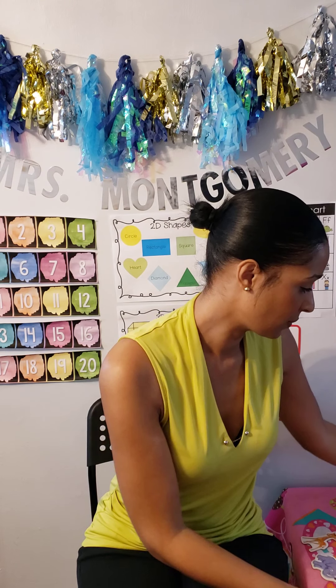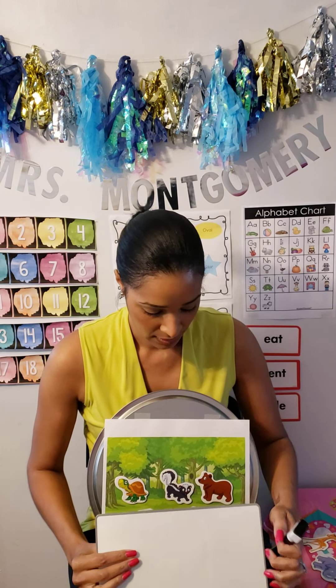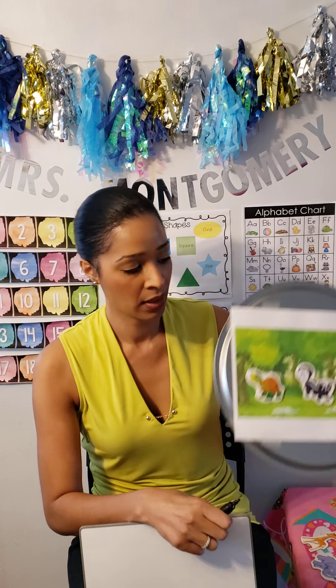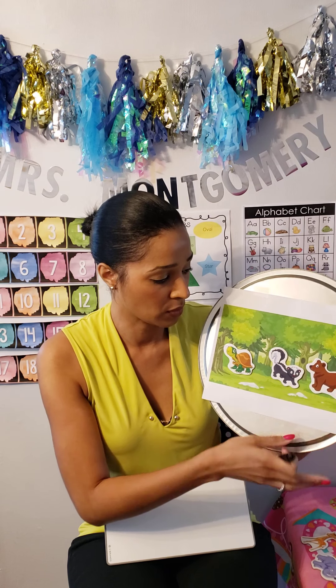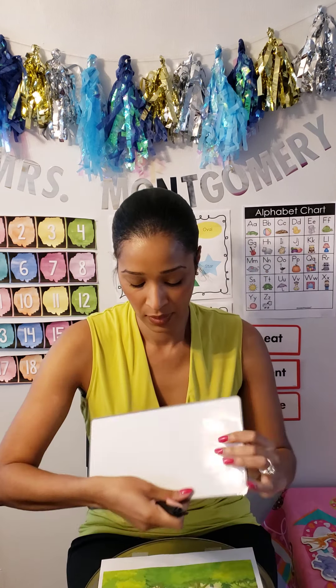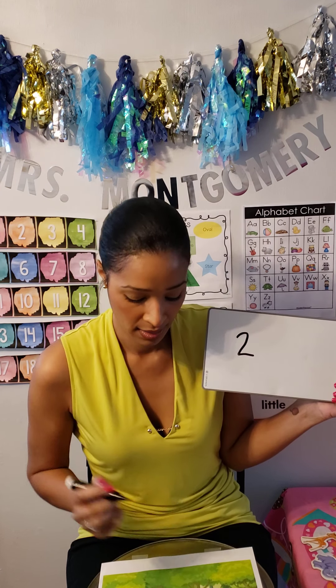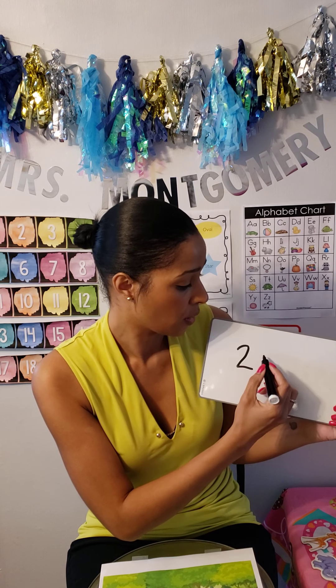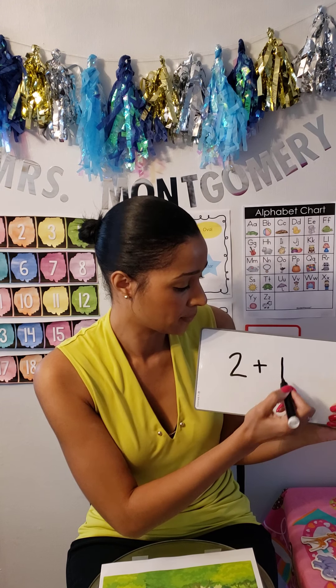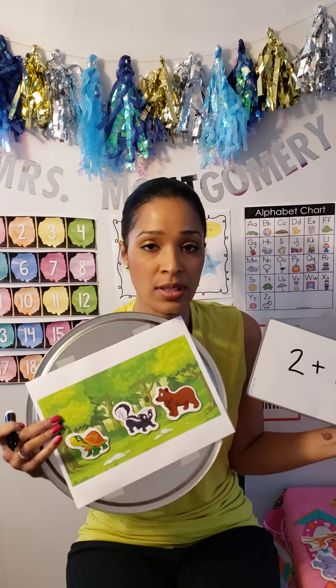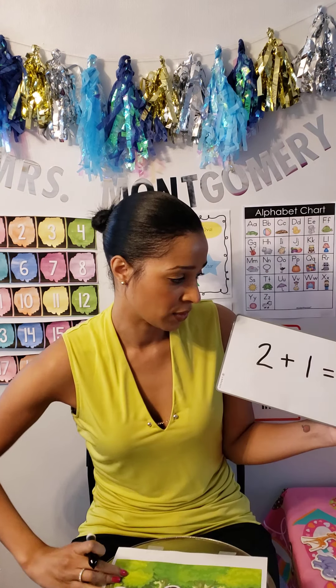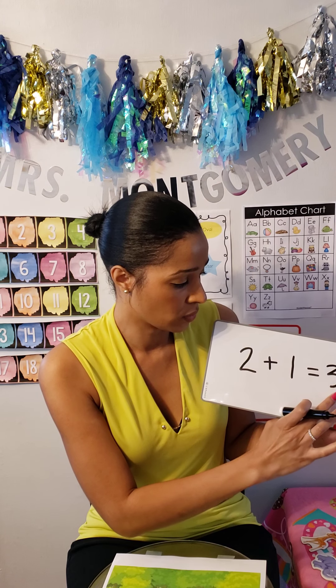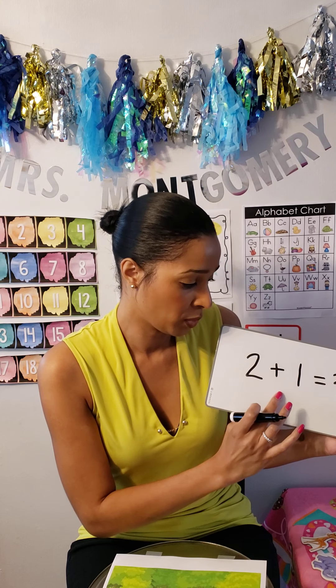Let's write an equation. Grab your pencil and your paper and let's do it together. We started with two animals — the bear and the skunk. Are we adding or subtracting? Did we get more or did we get less? Another one came, so we got more animals: plus one more, the turtle. Two plus one equals three. We had two animals and one more came and now we have three animals. Two plus one equals three — we wrote an equation, some people call it a number sentence.